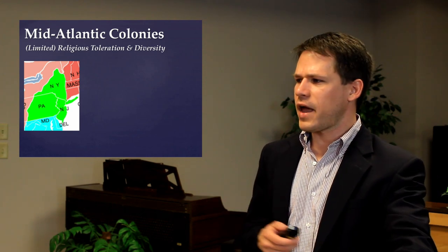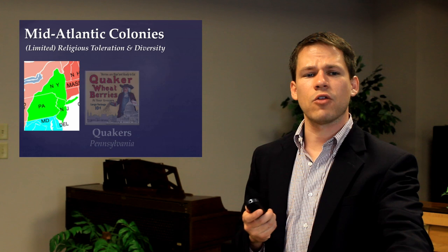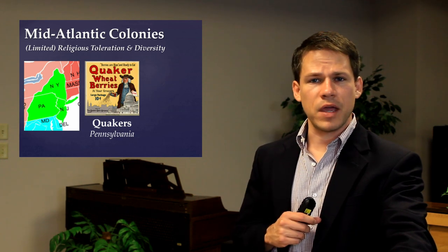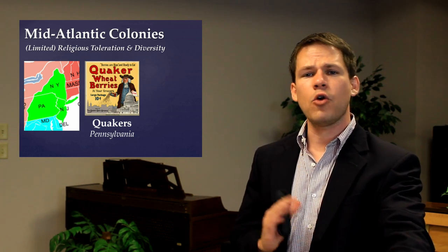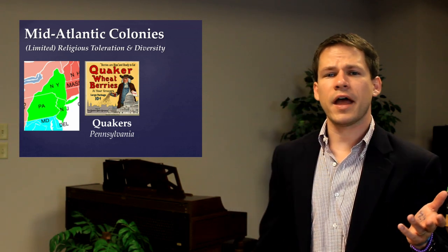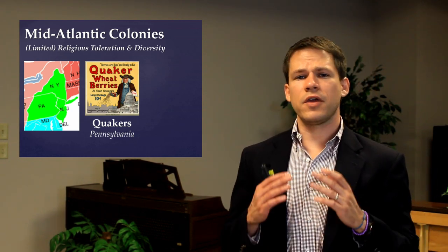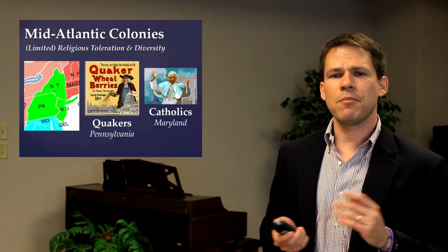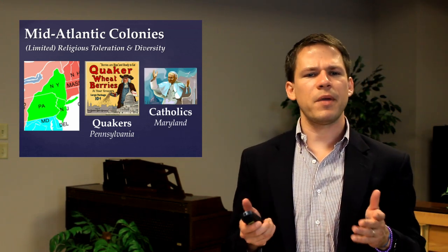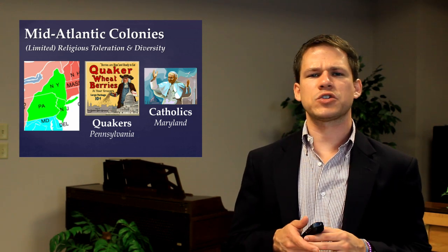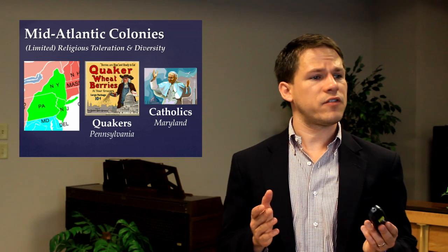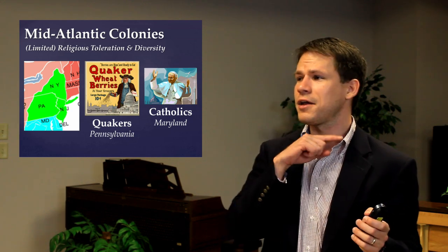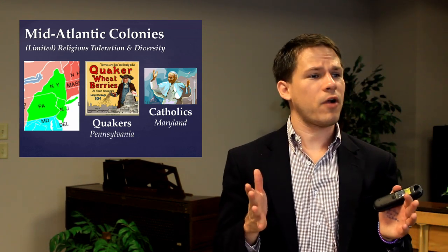In the mid-Atlantic colonies, there is a limited amount of religious toleration and diversity. In Pennsylvania, the Quakers — also called the Society of Friends — were nonviolent pacifists who believed nobody should be forced to do anything and that everyone should have freedom of conscience. In Maryland, founded by Lord Baltimore, it was supposed to be a haven for Catholics. Lord Baltimore proclaimed Christian toleration — any Trinitarian Christian could settle in Maryland and practice their religion freely. This was pretty progressive toleration for the time.